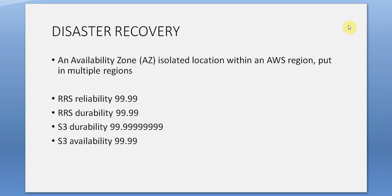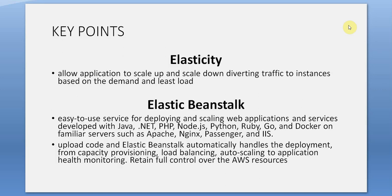Availability Zones are isolated locations within an AWS region. Put resources in multiple regions for better disaster recovery. RRS reliability is 99.99%. RRS durability is 99.99%. S3 durability is 99.999999999% (eleven nines) — the only one with the most nines. S3 availability is 99.99%.